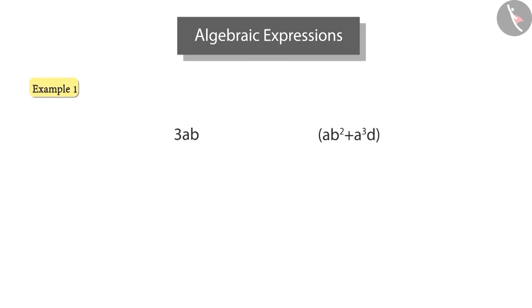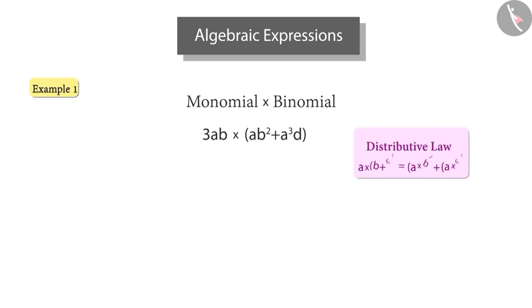Let us suppose we have to multiply these two expressions. It is a matter of multiplication of monomials and binomials. We know that we have to use the distributive property here. So this will be equal to the sum of 3ab multiplied by ab square and 3ab multiplied by a cube d. Now both these terms are multiplications of a monomial and a monomial. Thus, after simplifying, we will get this as our final answer.